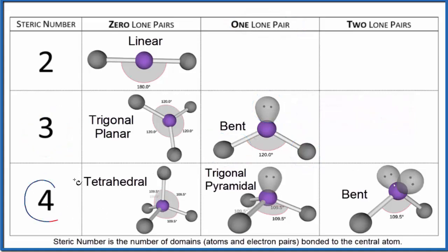We can also have a steric number of four. We have four things attached to the central atom here: one, two, three, four, and two of them being lone pairs. One, two lone pairs, and then two atoms attached. That's going to be bent as well, but this bond angle here will be less because now we have two lone pairs pushing down.